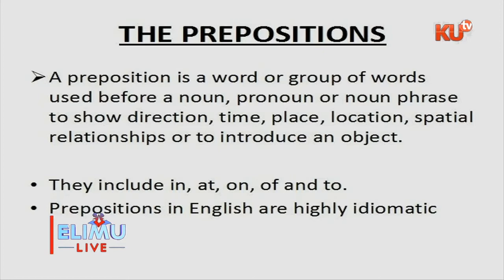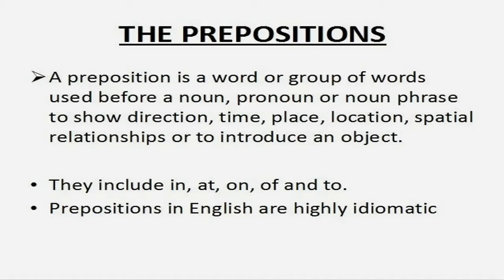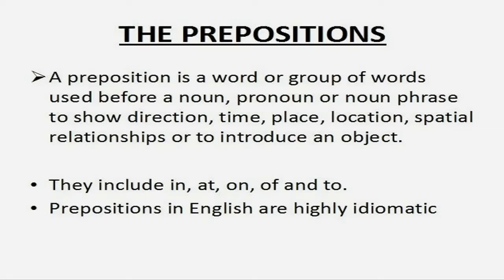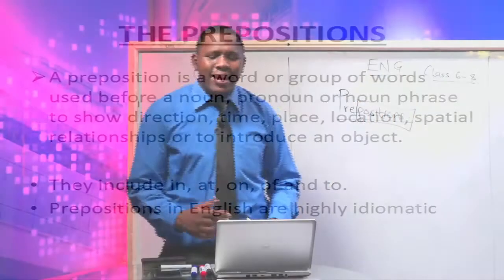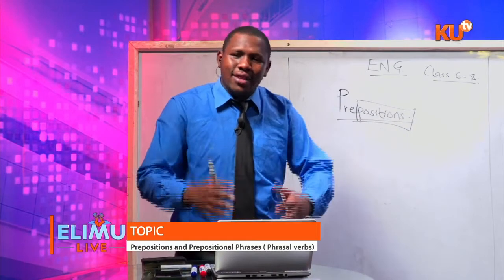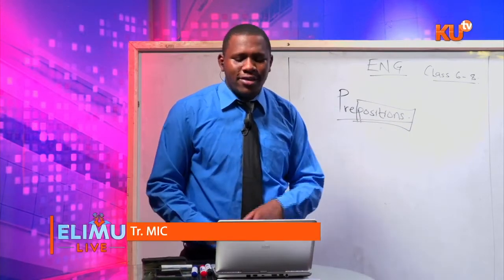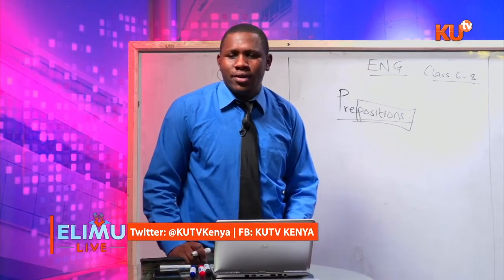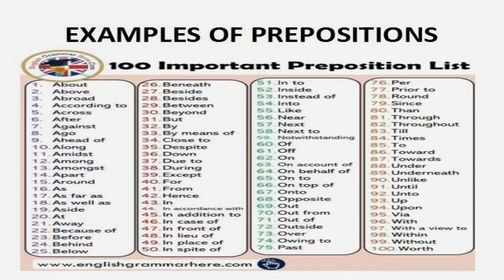Examples of prepositions include in, at, on, off, to, and many others. Prepositions in English are highly idiomatic. Here is a list of important prepositions: about, above, abroad, according to, across, after, against, ago, ahead of, beneath, and besides.